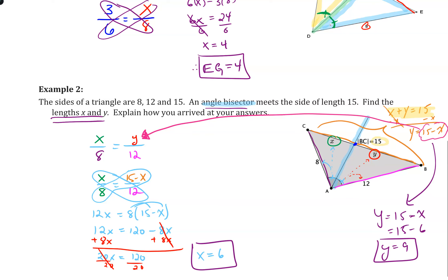You can use any two variables you want for the two pieces — not just x and y. Just avoid using letters that correspond to points already labeled on your triangle, such as A or B in this case. Take a moment, feel free to go back and review any part of the video to help with your notes or work through the process.